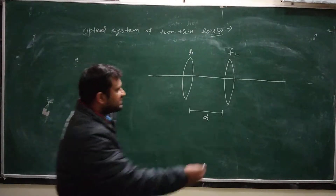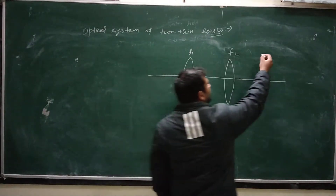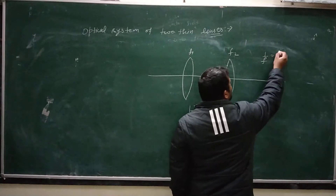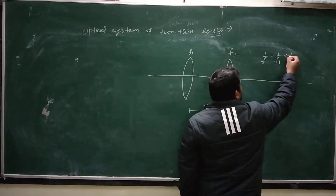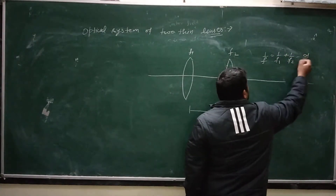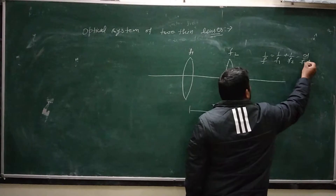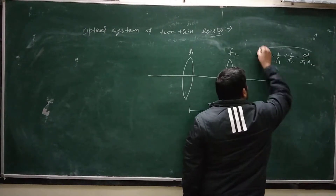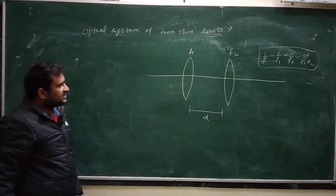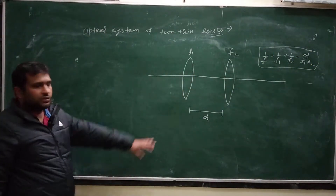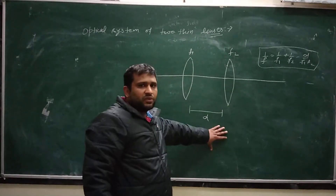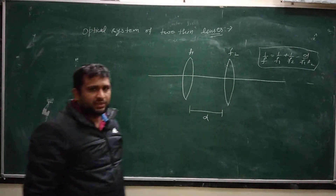This formula, as we know from 12th standard, is 1/f = 1/f1 + 1/f2 − D/(f1·f2). This formula gives the focal length of the combination of two thin lenses. We have to derive it using matrix methods.